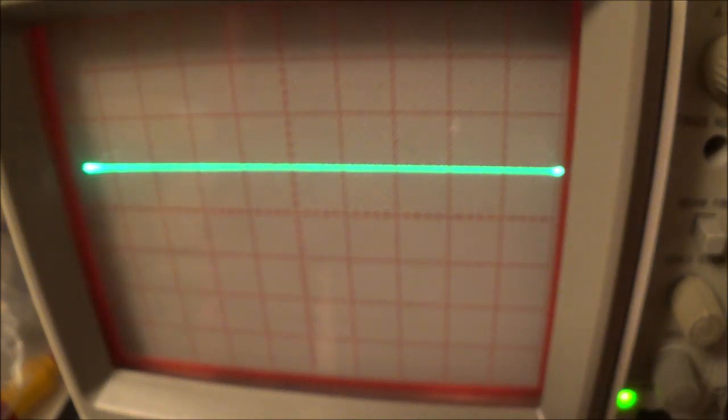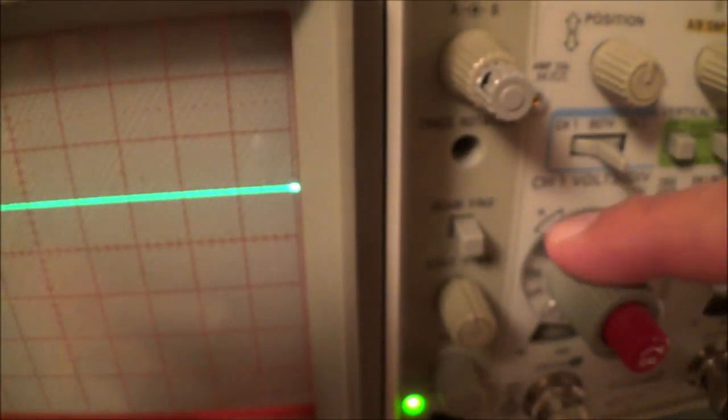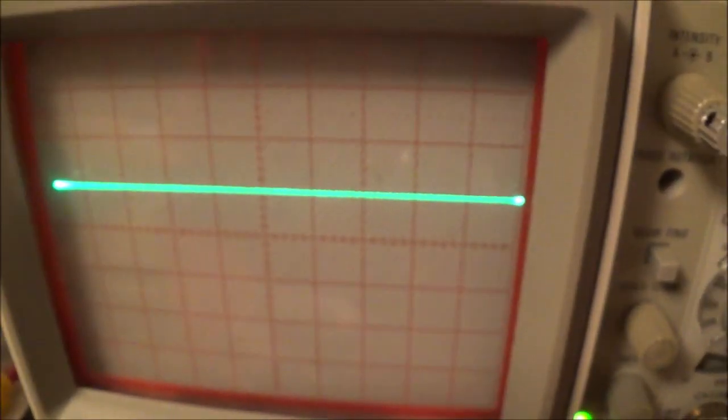Once we got that set up here at 0.1 volts per division, I'm in my collector sweep voltage here. I can adjust that anywhere from 10 to 100 volts. I'm at 10 volts basically.